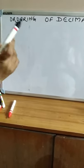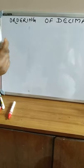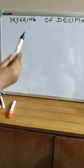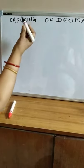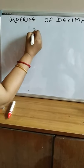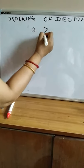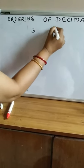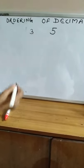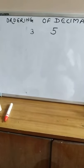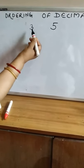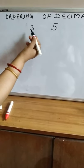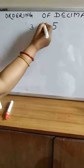As you have learnt to compare whole numbers, let us take for example 3 and 5. These are whole numbers and we have to compare them. This is a single digit number. So which one is more, 3 or 5? 5 is more.